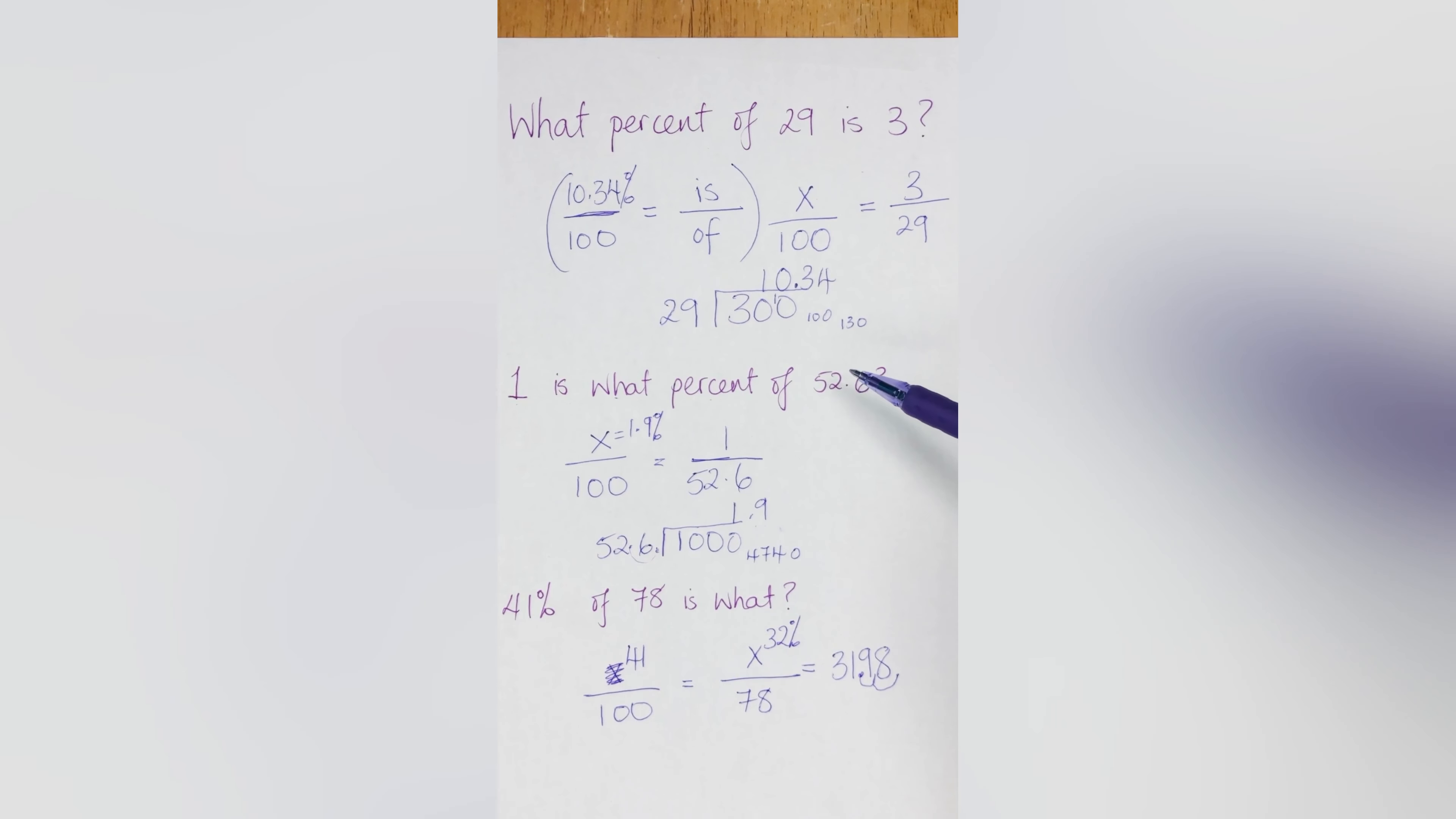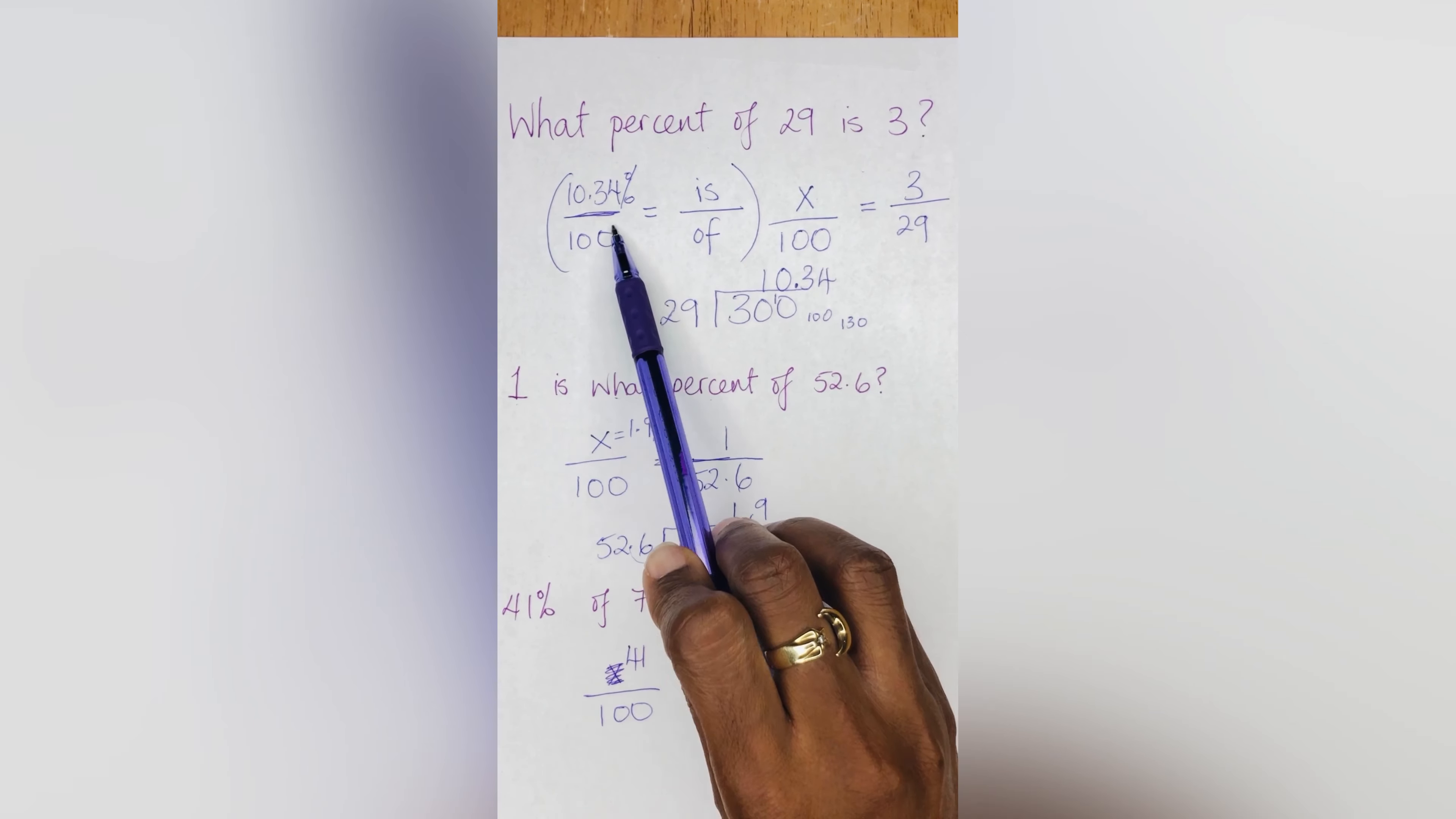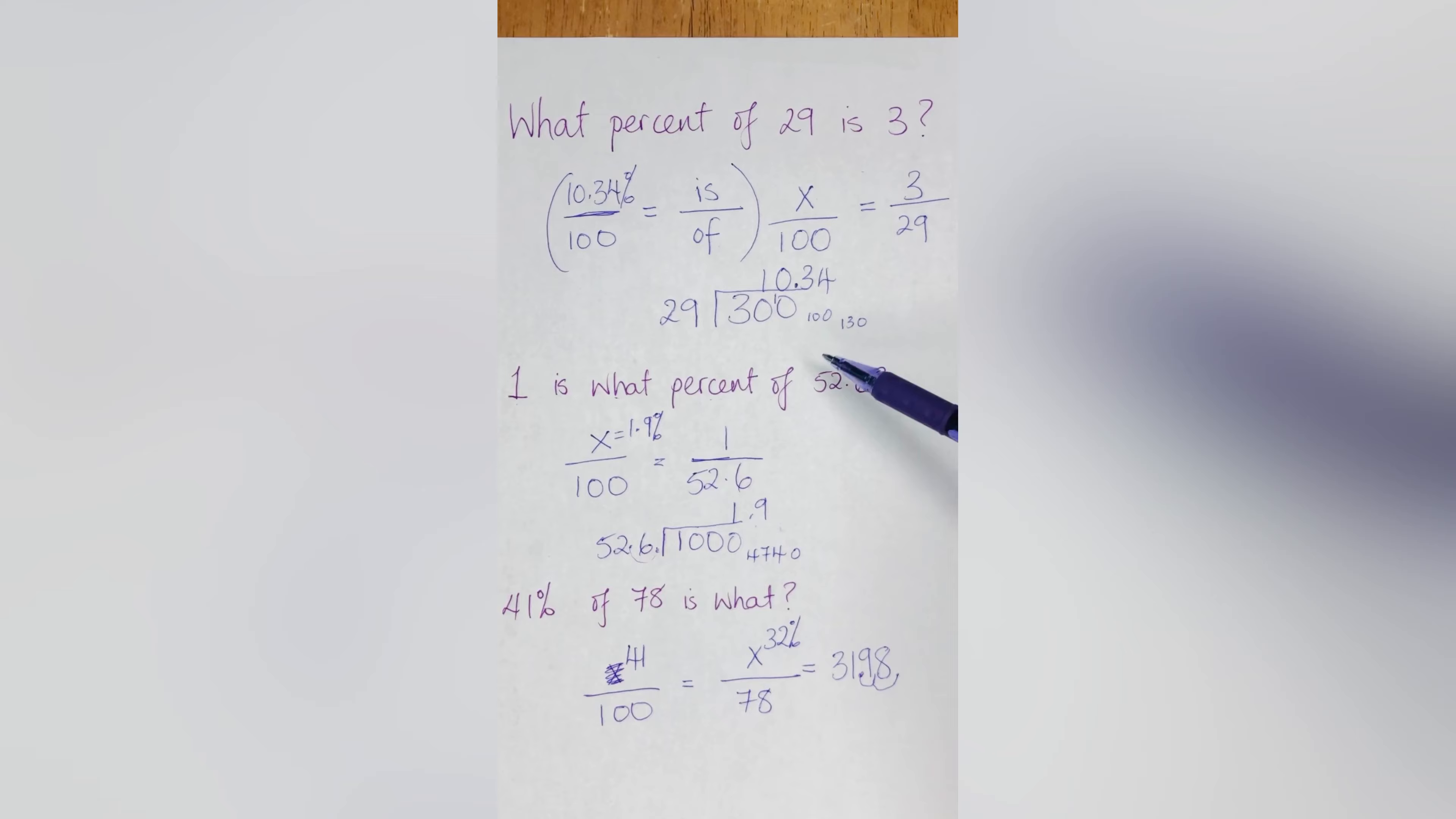All right. And that my friends is how you would do percentage problems like these questions. All you have to do is remember the formula, the over 100, that is the 'of', and then you just put your numbers in accordingly to according to what the question said. All right, there you have it. Any questions, please ask below. If you have any other suggestions or strategies, please share with us. And thank you for watching.